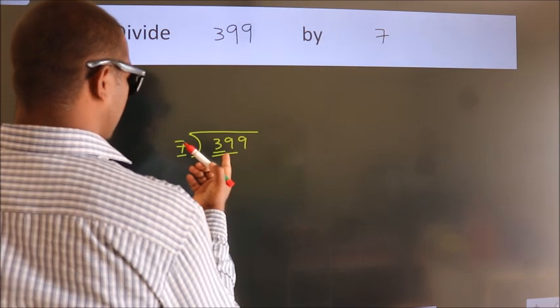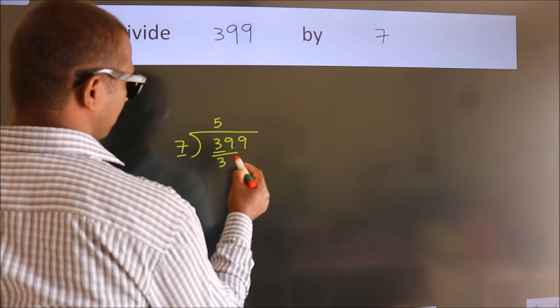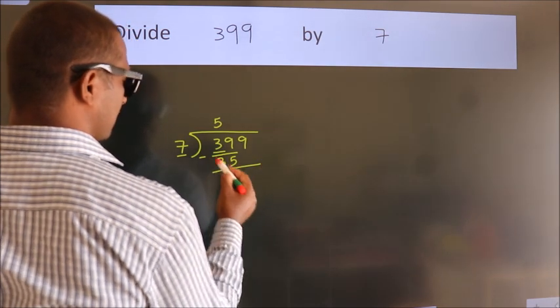A number close to 39 in 7 table is 7 fives, 35. Now we should subtract. We get 4.